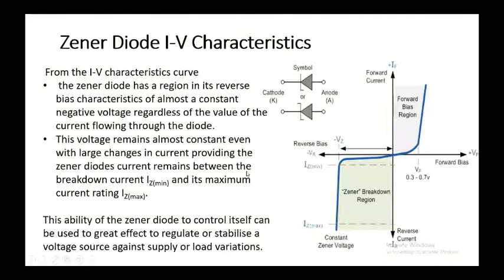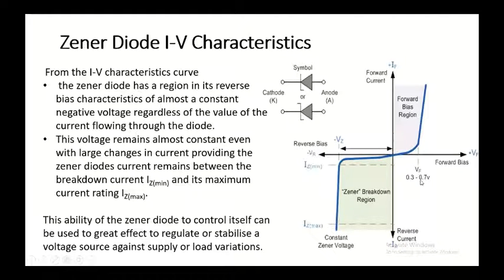This is the forward biased voltage, this is the reverse biased voltage, this is the forward current, and this is the reverse current. When it is forward biased it acts as a normal ordinary diode, having a cut-in voltage of 0.3V or 0.7V depending upon whether it is a germanium or silicon diode. In the reverse biased condition there is a reverse saturation current, which in turn results in a reverse breakdown.